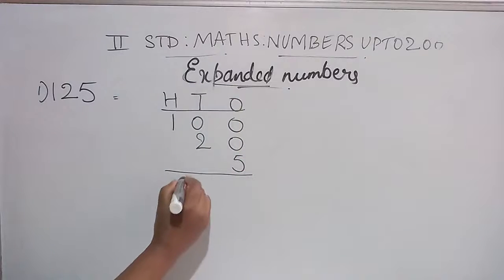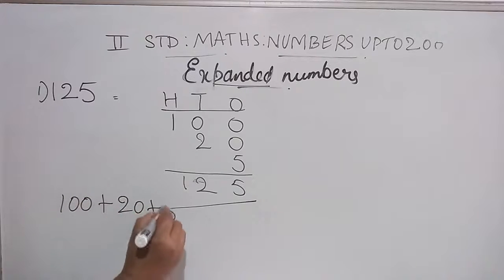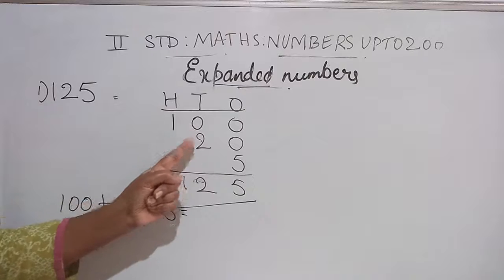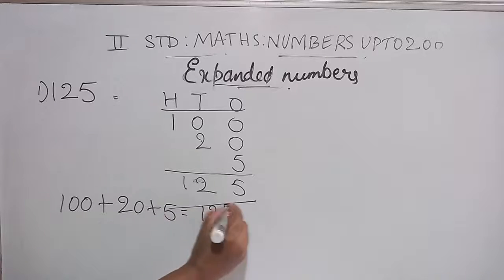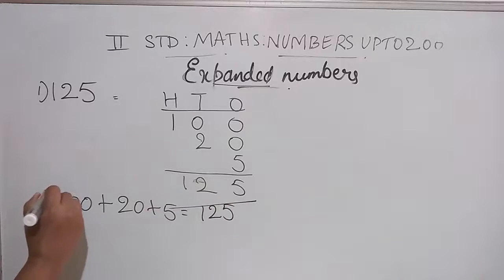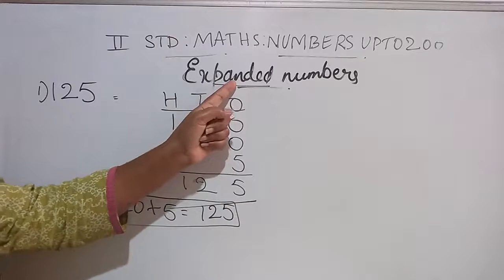We get 125. So this number is written like this also: 100 plus 20 plus 5. We are adding all these and writing it down. Then we get 125. So this is expansion form.